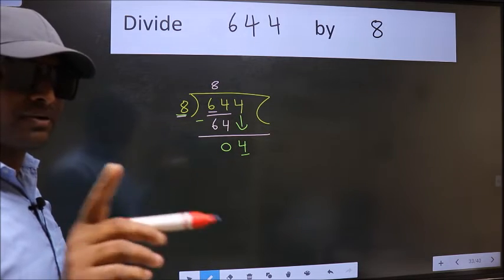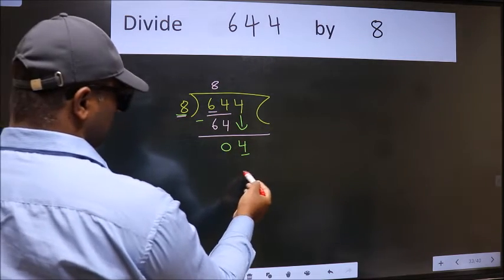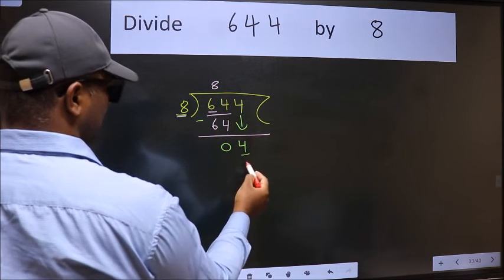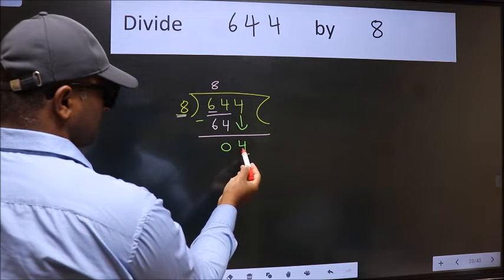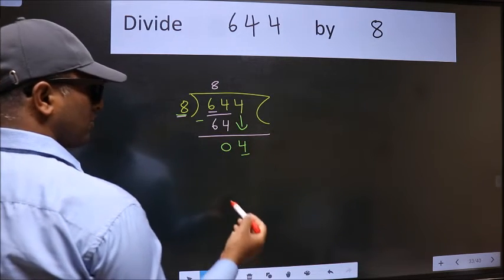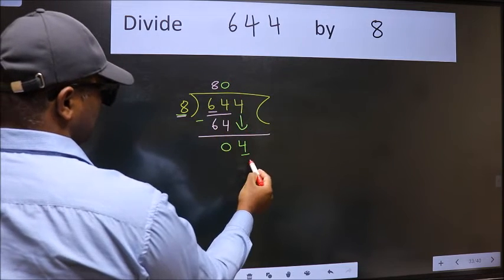Instead of that, what we should think of doing is which number should we take here? If I take 1, we will get 8, but 8 is larger than 4. So what we do is we take 0. So 8 into 0 is 0.